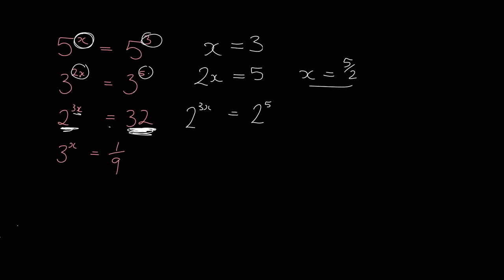Okay, so now it's easy to compare because you've got 2 to the 3x is equal to 2 to the 5. How are you going to get those things to be equal? The only way is if 3x is equal to 5. So x is equal to 5 over 3.